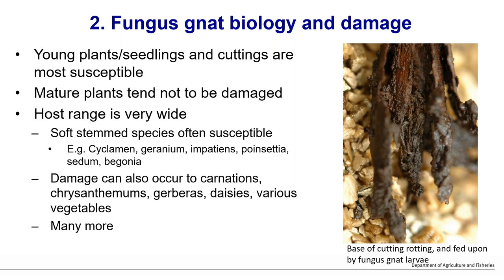Young plants, seedlings, and cuttings that are just starting to put out roots are most susceptible, since losing a small amount of root material when there is only a small amount causes more damage. Mature plants tend not to be damaged unless there are very high numbers. Soft-stemmed species tend to be very susceptible — things like cyclamen, geraniums, impatiens, poinsettia, sedums, and many others.